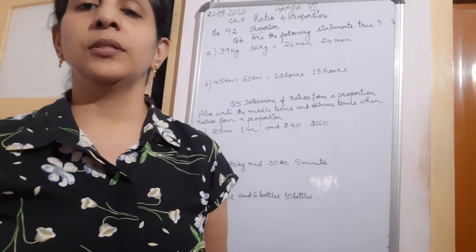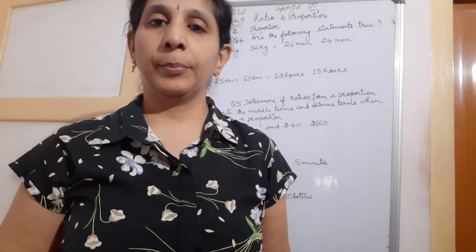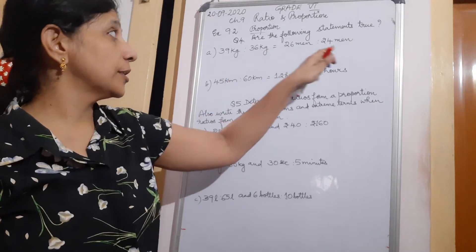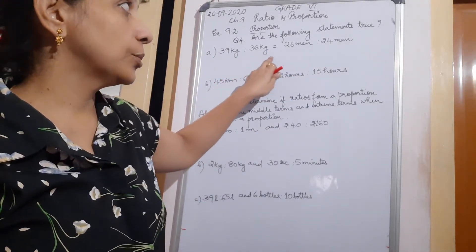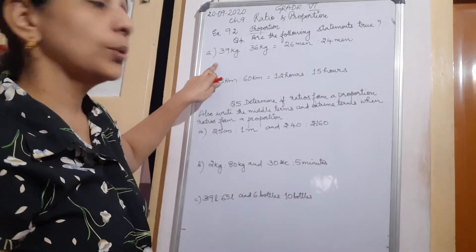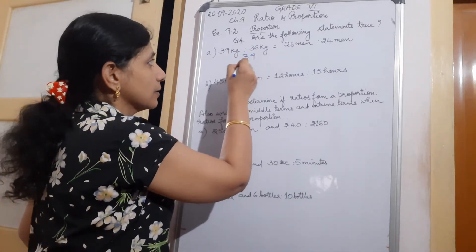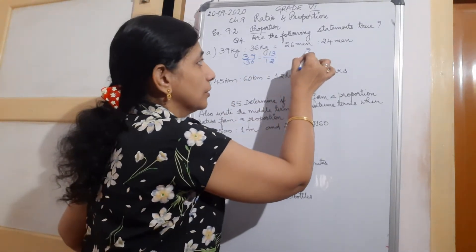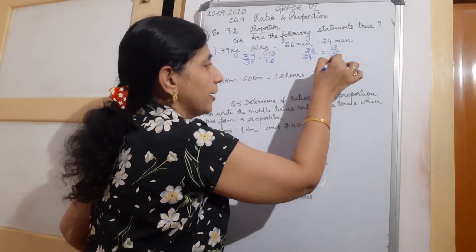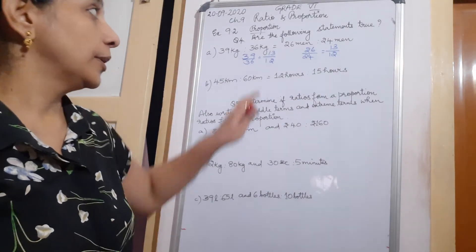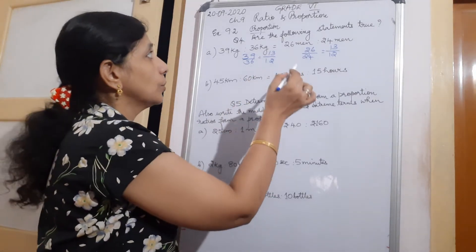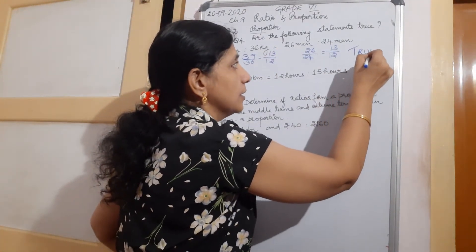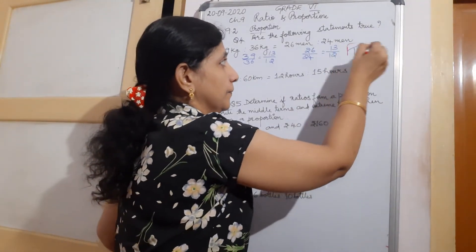You have already done the introduction, and today you learned that if two ratios are in proportion, then the product of extremes equals the product of means. Are the following statements true? 39 kg to 36 equals 26 to 24. So 39 by 36, dividing by 3, gives 13 upon 12. And 26 ratio 24 divided by 2 is again 13 upon 12. Both fractions are equal, so the statement is true.